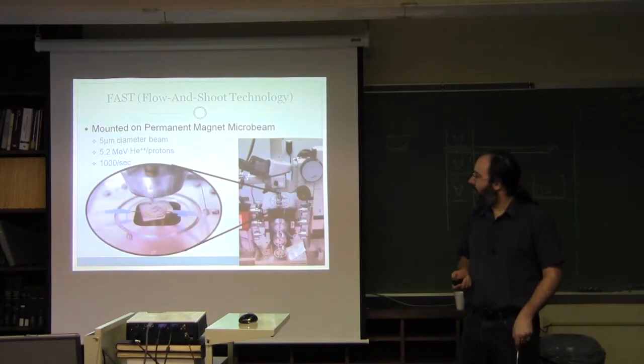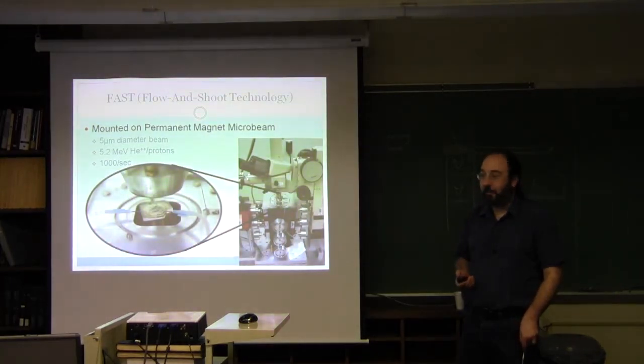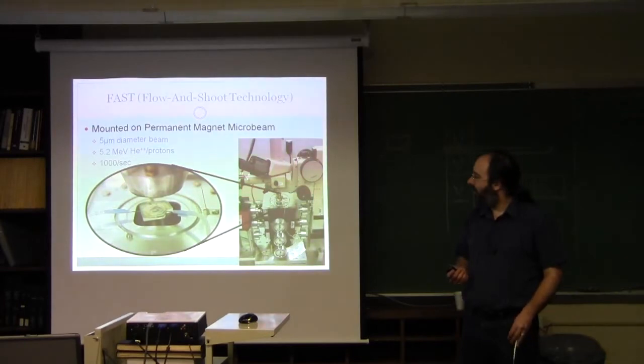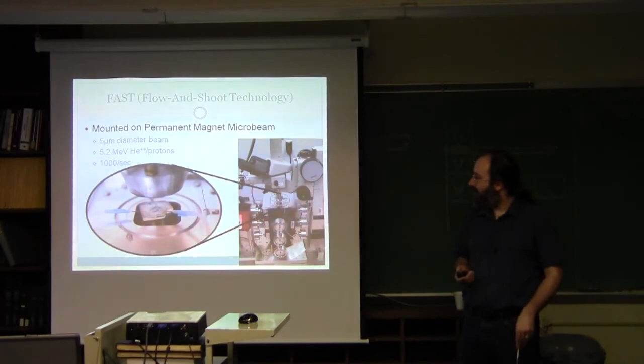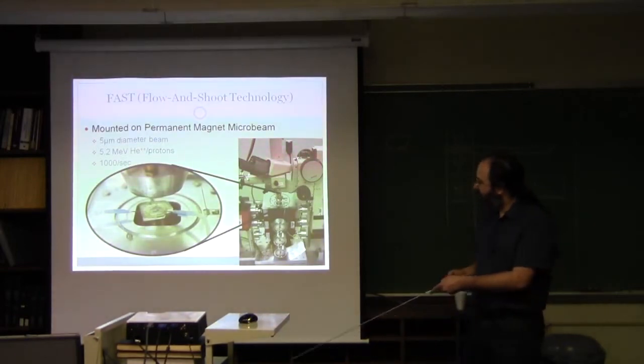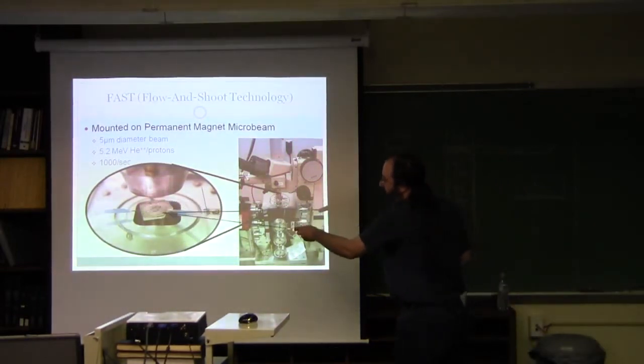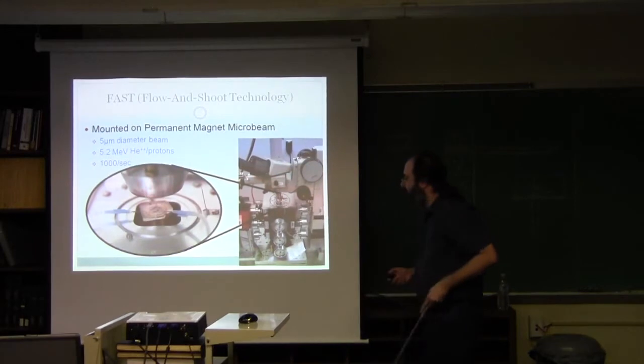This is mounted on the permanent magnet microbeam, which features a 5 micron diameter beam with about 5 MeV of either alpha particles or protons at the rates of a few thousand per second, at least with the protons. What we're essentially doing is bonding a microfluidic chip to the exit window of the microbeam.